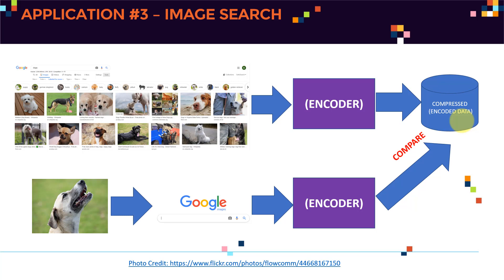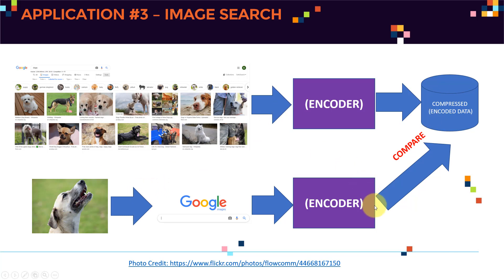When a user submits an image to Google Images, it is passed through an encoder that produces an encoded array. You can then perform a comparison between the encoded query and the encoded data source containing features from all images in the dataset — this makes image matching very efficient and powerful.